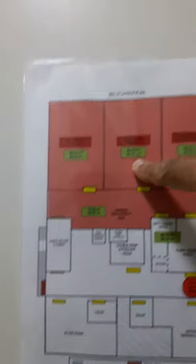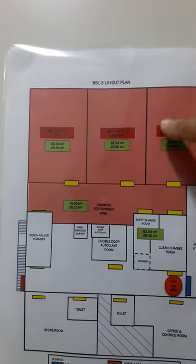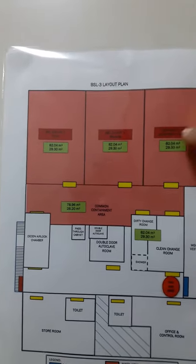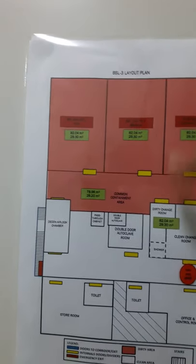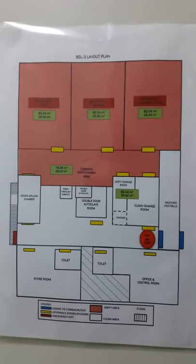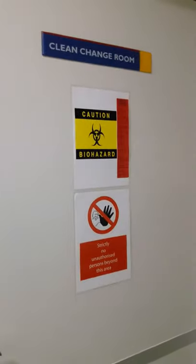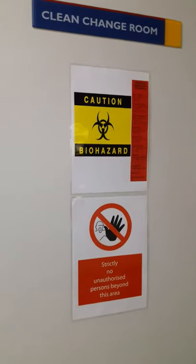All the work involving pathogens — such as diagnostics and experiments — takes place in these three suites. They are under negative pressure compared to the zone where I am standing right now. This is the way in which an engineering control is applied at this facility to contain microbes to their respective laboratories and working areas. This is the basic concept of containment.